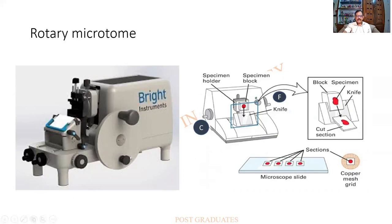In the diagrammatic view, the block holder and knife are visible; the block moves up and down. There is a fine adjustment and a coarse adjustment — the coarse adjustment is used to bring the block forward quickly when it is far behind, otherwise you would be moving it micron by micron all day. When sections are cut, ribbon sections are possible due to heat generated.